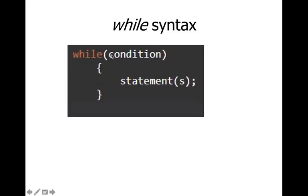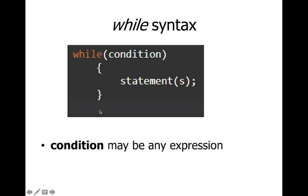The syntax of the while loop uses the keyword 'while', followed by a condition in brackets. If the condition is true, all statements inside the braces are executed. After execution, the condition is checked again. If true, the statements execute again; if false, the loop exits and the next statement after the loop runs. The condition can be any expression — logical, arithmetic, or relational.